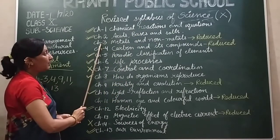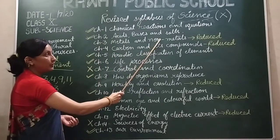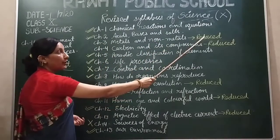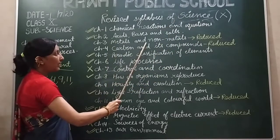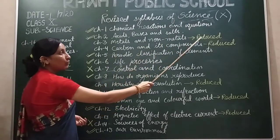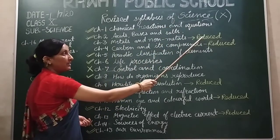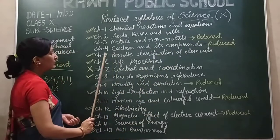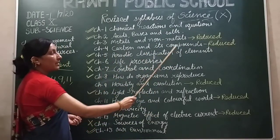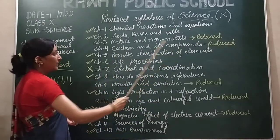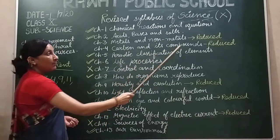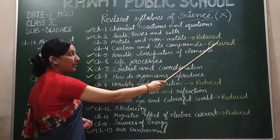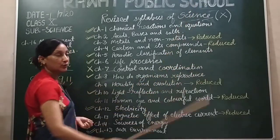Chapter number 3, Metals and Non-Metals — some topics are reduced, so this chapter is reduced. Chapter number 4, Carbon and its Compounds — this chapter is also reduced, and many topics are removed. So this chapter is reduced.